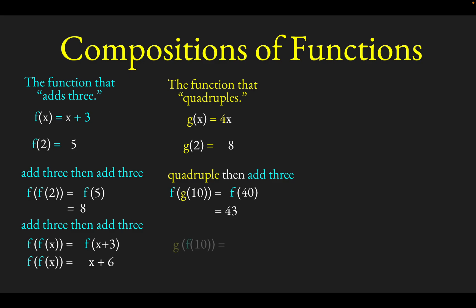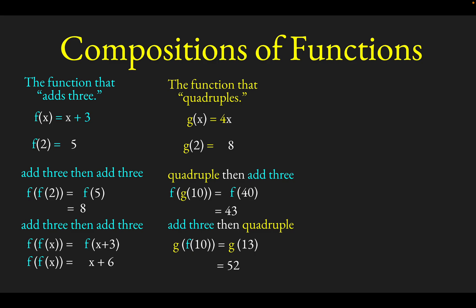As another example, we might think of g of f of 10. Notice the order here matters — we've just switched the order. So instead of quadrupling then adding 3, we're going to add 3 first and then quadruple. We apply f to 10, which adds 3 and gives us 13. Then g quadruples the 13, which gives us 52.